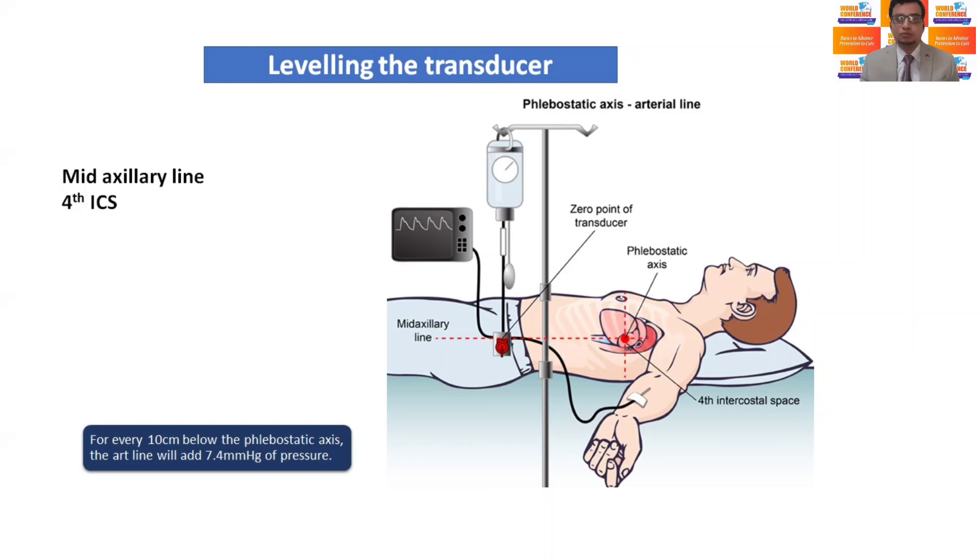The transducer should be leveled using the clamps along the phlebostatic axis, which is the junction of the fourth intercostal space and mid-axillary line. For every 10 cm below the phlebostatic axis, the arterial line will add 7.4 mm of pressure, hence overestimates it.